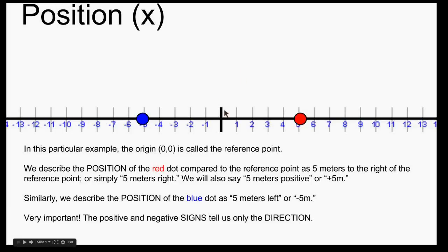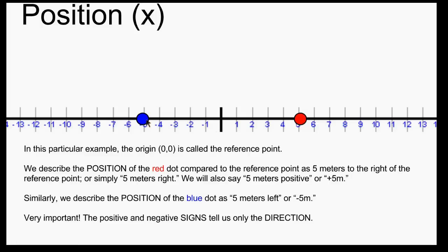First we're going to look at position. Position is always measured relative to some reference point. Here the reference point will be 0, 0. This red dot we would say is 5 meters to the right of the reference point, or just 5 meters right. We could also say positive 5 meters right. This blue dot is to the left of the reference point, so we would say it's 5 meters left, or negative 5 meters. Notice that positive and negative signs, in this case, tell us only the direction.